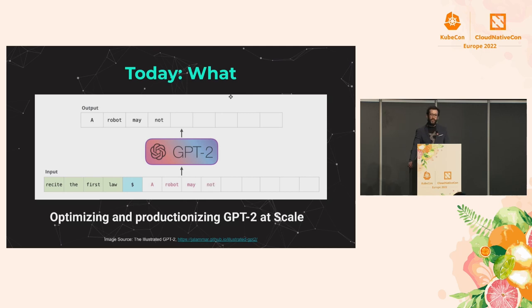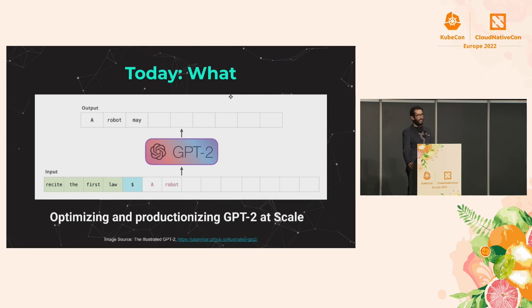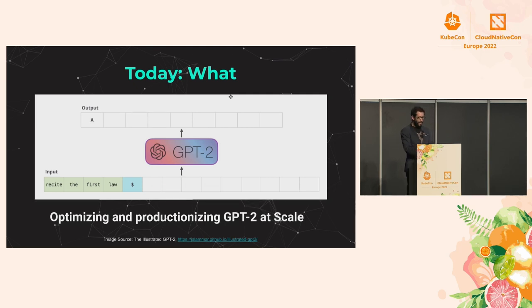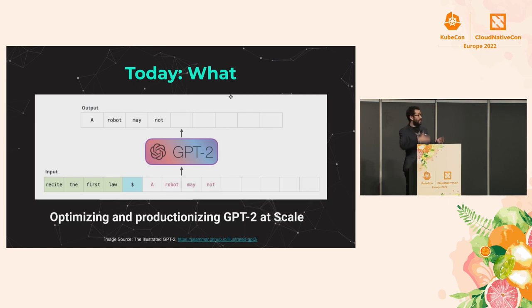Let's start with the what. We're going to be taking the GPT-2 text generation use case that some of you may have come across before. What it basically does is take a text input and simply generate the next token, which allows you to generate human-like text. Here you can see the input tokens are 'A', 'robot', 'may' — and the model actually generates that next token.